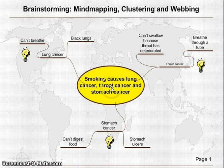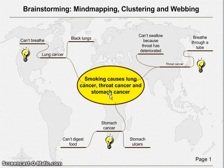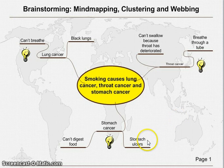Then you would say smoking also causes throat cancer, so here you have another paragraph for throat cancer — you can't swallow because the throat has deteriorated, and you've got to breathe through a tube. And then smoking also causes stomach cancer, so you have a separate paragraph about stomach cancer, in which you say you can't digest food and you get stomach ulcers.